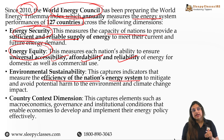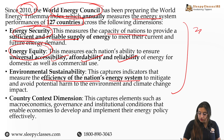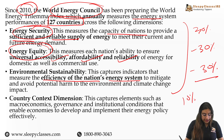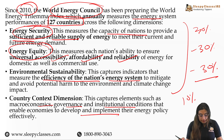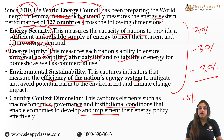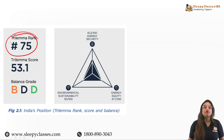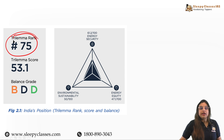So this index measures three things. The three dimensions each carry 30% weightage because they are very important. There is also a fourth aspect — the country's macroeconomics, governance and institutional conditions — which enables economies to develop and implement energy policy effectively. These three things are very difficult to achieve simultaneously. India's rank is 75th and India's score is 53.1.